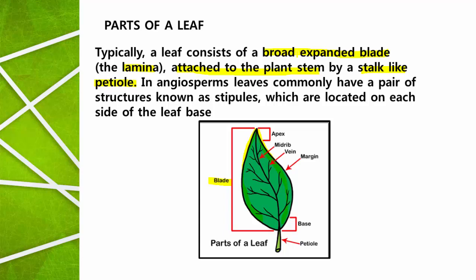The expanded part of the leaf is called lamina or leaf blade. The stalk of the leaf is called the petiole — with the help of the petiole, the leaves are attached to the stem. In angiosperms, that is flowering plants, leaves commonly have a pair of structures known as stipules, which are located on each side of the leaf base.